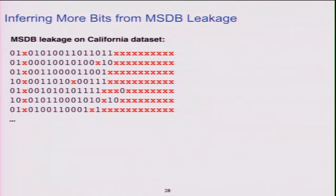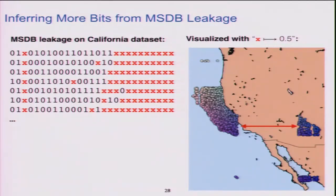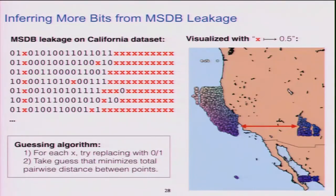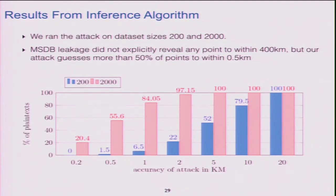Things are a bit worse than a naive reading of the leakage might suggest. Looking at the actual leakage when we encrypted latitudes in the California dataset, if you replace all the unknown bits with one-half, you can visualize the leakage and see that California's shape is largely preserved with gaps where high-order bits are hidden. If I gave this to you by hand, you could reassemble California — those bits aren't really hidden. We automated this through an optimization algorithm that guessed the unknown x's one at a time to minimize pairwise distances, and got very effective plaintext approximation.